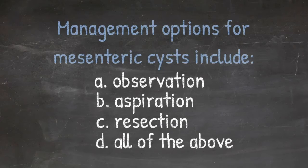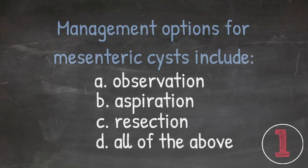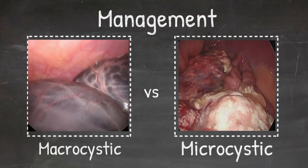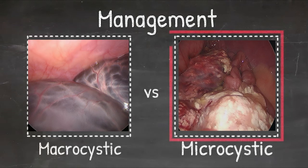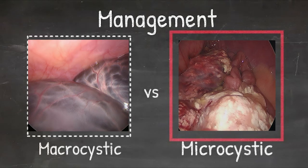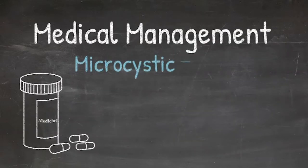So now you've diagnosed a symptomatic mesenteric cyst — how do you manage it? There are two different approaches. One of the first questions is whether the cyst is macrocystic or microcystic. If cysts are microcystic in nature, or they're mixed lesions including microcystic and macrocystic components, we often start with medical therapy using sirolimus as an agent to treat these cysts.